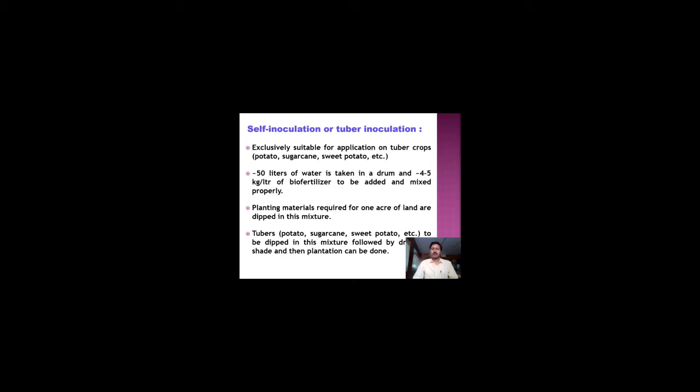The fourth type is tuber inoculation, conducted exclusively for tuber crops like potato, sugarcane, sweet potato, and turmeric. Approximately 50 liters of water is taken in a drum and 4 to 5 kg of biofertilizer is added and mixed properly. Planting materials required for one acre are dipped in this mixture. The tubers are dipped for about half an hour to one hour, then dried in the shade before plantation.